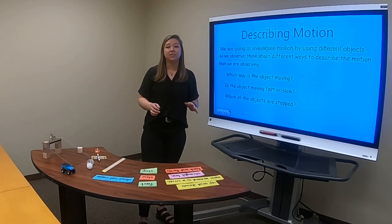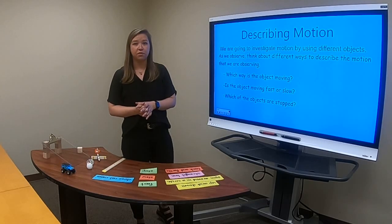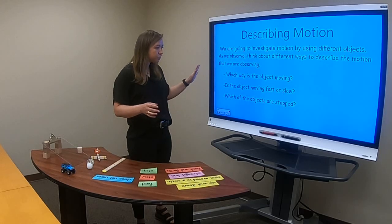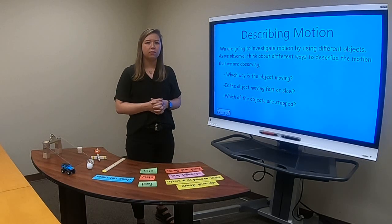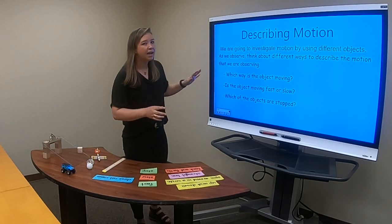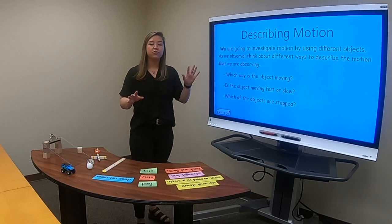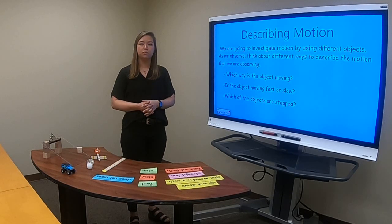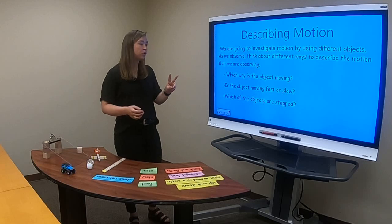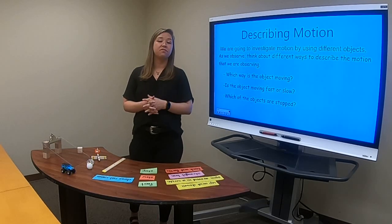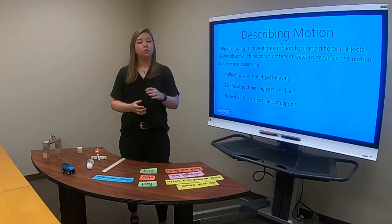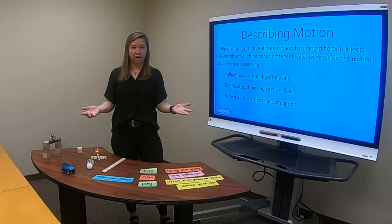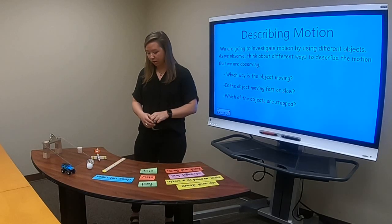Today we are going to be looking at and describing different types of motion. We have six different objects on my table right here and we're going to be looking at three different questions about these objects. So as we are observing them I want you to think about these three questions. The first question is how is this object moving? Which way is it moving? The second question is is this object moving fast or is it moving slow? The third question is are any of these objects on this table stopped? So let's get to looking at our objects.